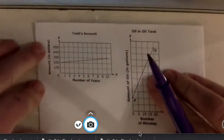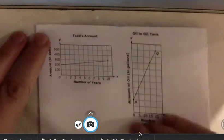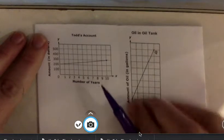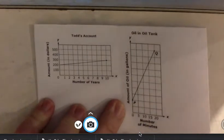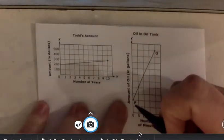We're going to look at interpreting slope. So we're going to look at two graphs. We have Todd's account, we can see number of years versus the amount in dollars in that account that Todd has, and then we have oil in an oil tank, and we're going to be looking at both of these situations and interpreting the slope for each one.